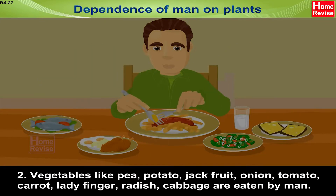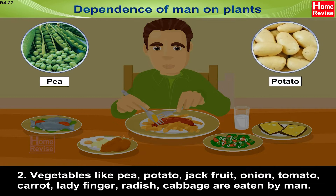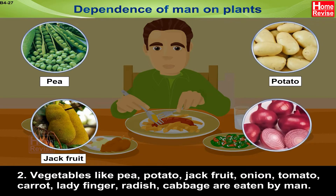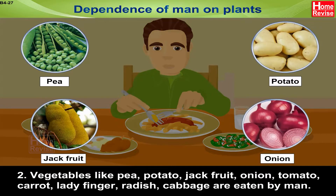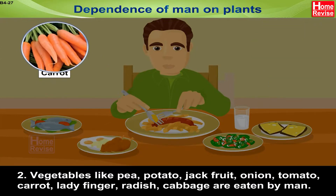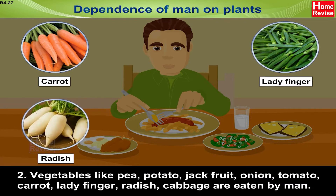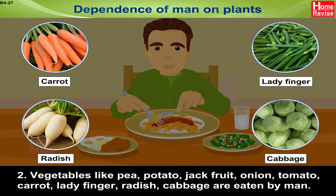Vegetables like Pea, Potato, Jackfruit, Onion, Tomato, Carrot, Ladyfinger, Radish, and Cabbage are eaten by man.